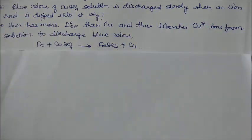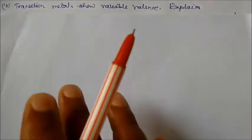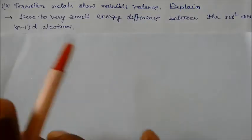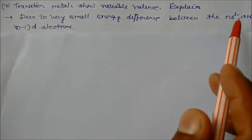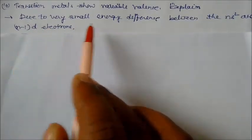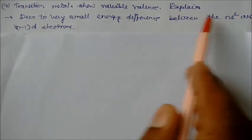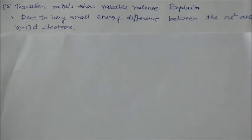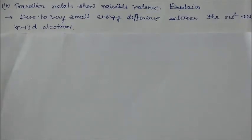Transition metals show variable valence. Explain. Due to the very small energy difference between the ns and n-1 d electrons, very small, that's why they show variable valence.